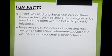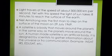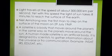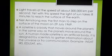Fun facts: Jupiter, Saturn and Uranus have rings around them — these are belts of small debris visible only with a powerful telescope. Those who study celestial bodies and their movements are called astronomers; Aryabhata was a famous astronomer of ancient India. Light travels at the speed of about 300,000 kilometers per second, yet the light of the Sun takes eight minutes to reach the surface of the Earth.